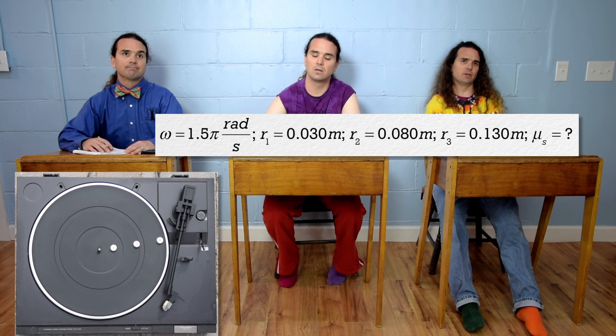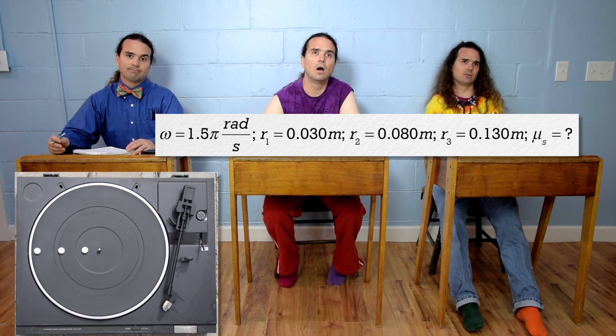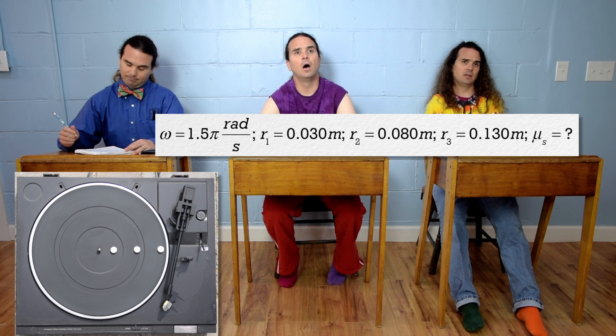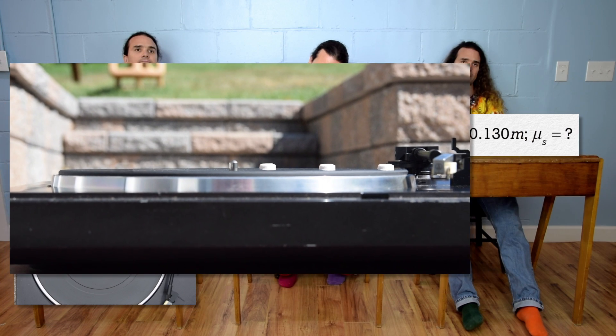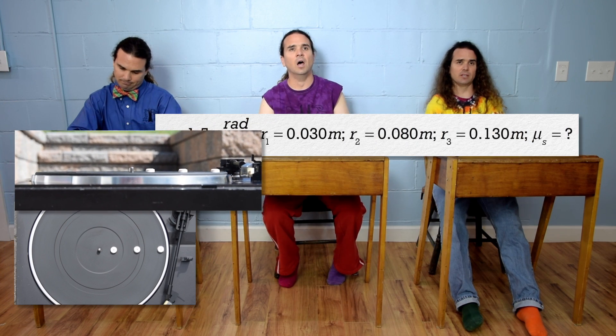Well, we need to start with free body diagrams, so let's pause the mints and add a side view. And actually, the free body diagram will be the same for all three mints, so we only need to draw one.